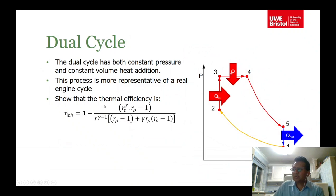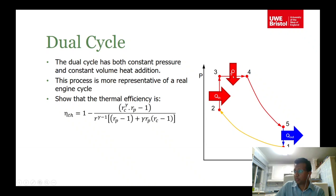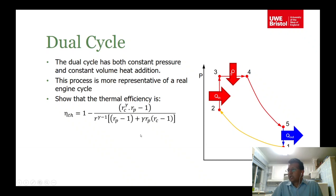The dual cycle is a cycle where 1→2 is isentropic compression, 2→3 is isochoric heat addition (the initial ignition phase), and 3→4 is isobaric heat addition (the remainder of combustion). So heat addition takes place in two stages — isochoric then isobaric — while expansion and heat release remain the same as before.